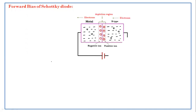In the Schottky diode under forward bias, in the metal, the majority carriers are electrons and the minority carriers are holes. Similarly, in the N-type, the majority carriers are electrons and the minority carriers are holes. In the PN junction diode, the majority carriers in P-type are holes, but here, since we are using metal, the majority carriers in the metal are electrons. The ions form a depletion region between the metal and N-type.